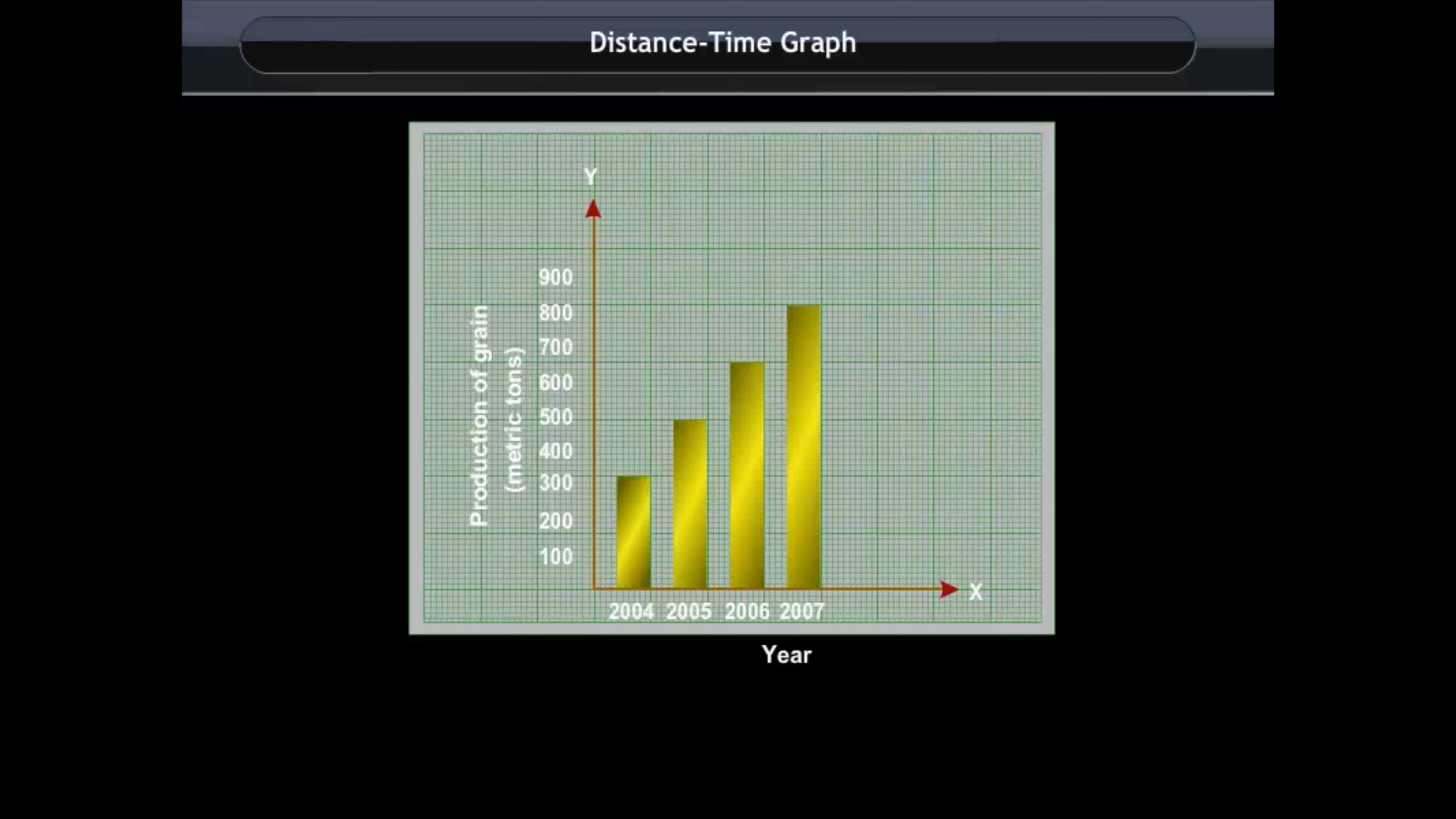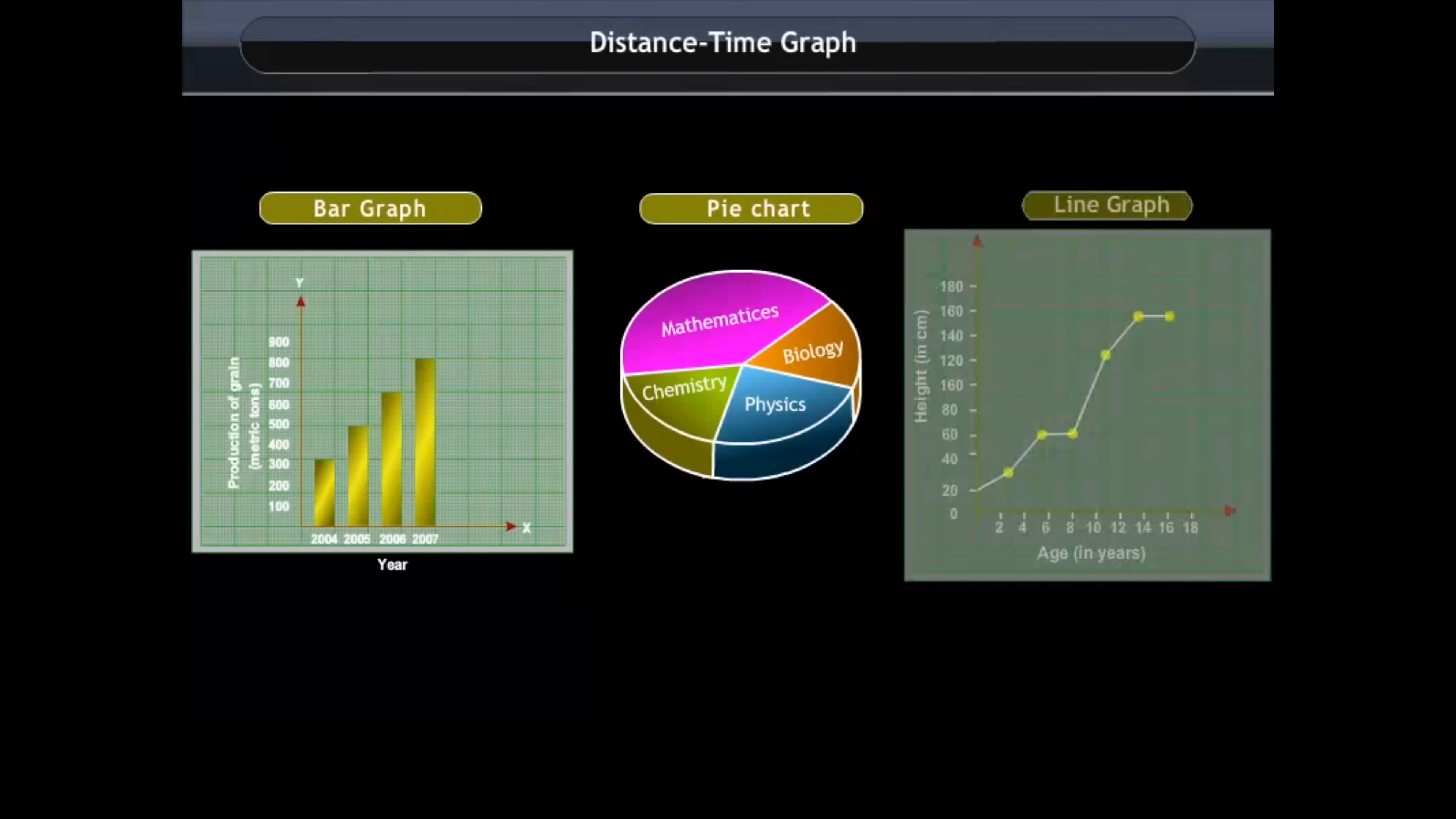A graph is a representation of mathematical data on graph paper. There are a number of graphical representations like bar graphs, pie charts, and line graphs.